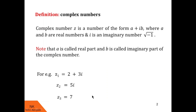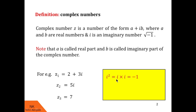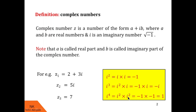Now let us discuss higher powers of this imaginary number i. i squared is i into i, but i is root of minus 1, so root of minus 1 into root of minus 1 is minus 1. i cubed can be written as i squared into i, but i squared is minus 1, so i cubed equals minus 1 into i, that is minus i. Similarly, i to the power 4 will be i squared into i squared, and minus 1 into minus 1 is 1, so i to the power 4 is 1.